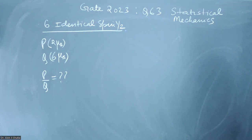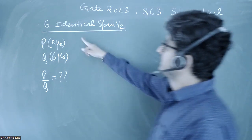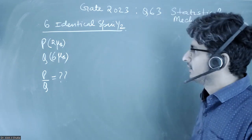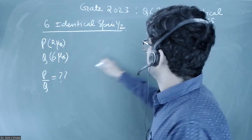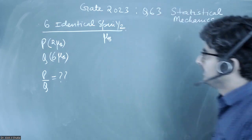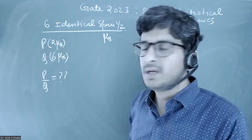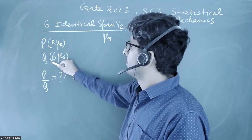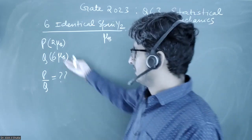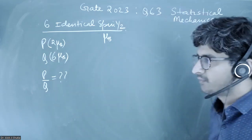This is question number 63 from GATE 2023, statistical mechanics. Six identical spin-half particles are given, all with magnetic moment μ_b. If P is the probability that they have net magnetic moment 2μ_b, and Q is the probability that they have magnetic moment 6μ_b, then we have to calculate the ratio P by Q.